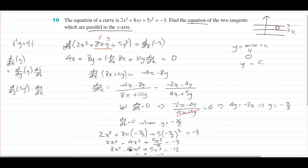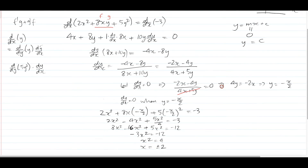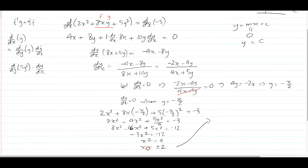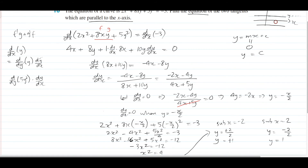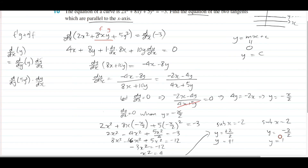Now you might think this is your answer, but we're not there yet. We know x equals plus or minus 2 and the gradient is flat, but we want the tangent. The tangent is y equals c, not x equals something. To find the y values, sub x back into y equals negative x on 2. When x equals negative 2, y equals negative negative 2 on 2, which is positive 1. When x equals positive 2, y equals negative 2 on 2, which is negative 1. So the two tangents are y equals 1 and y equals negative 1.